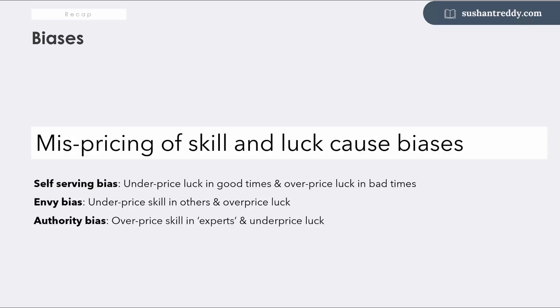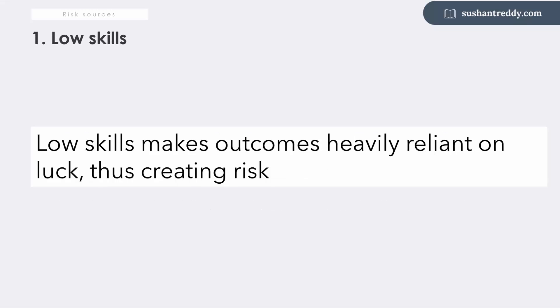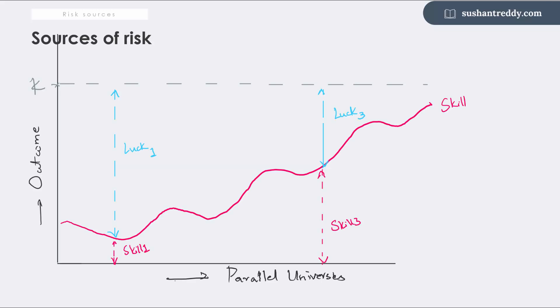In this episode I discuss how to mitigate risks originating from the skill luck interplay. Risk originates primarily when you either are at the low end of the skill curve or you misprice skill luck. When I am at the low skill level on the skill luck curve to generate the same level of outcome I need a big tailwind from good luck.